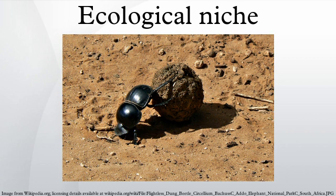An organism free of interference from other species could use the full range of conditions and resources in which it could survive and reproduce, which is called its fundamental niche. However, as a result of pressure from and interactions with other organisms, species are usually forced to occupy a niche that is narrower than this and to which they are mostly highly adapted. This is termed the realized niche.